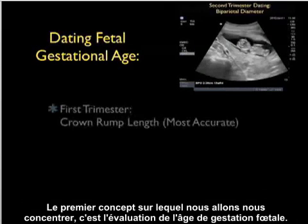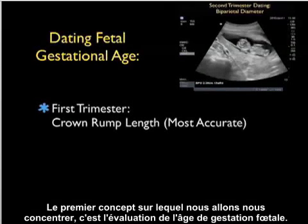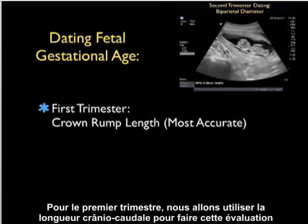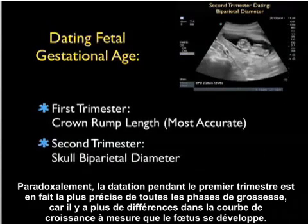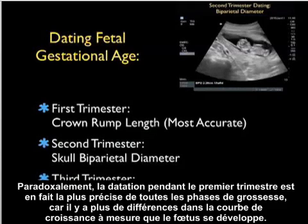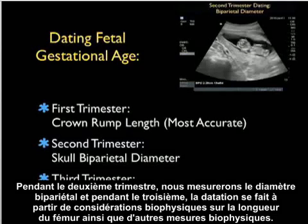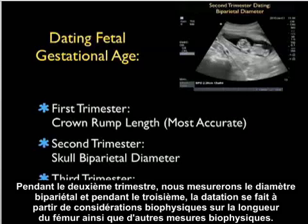The first concept that we'll focus on is dating fetal gestational age. Now in the first trimester, we're going to use an assessment of the crown rump length. Interestingly, dating in the first trimester is actually probably the most accurate during all phases of pregnancy, as there's a difference in the growth curve as the fetus develops. In the second trimester, we'll measure the skull biparietal diameter, and in the third trimester, the dating is composed of a biophysical profile focusing on the femur length, as well as other biophysical measurements.